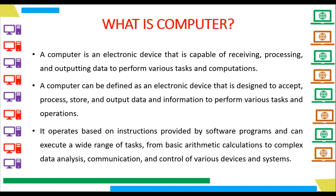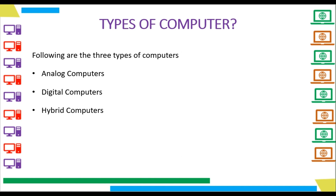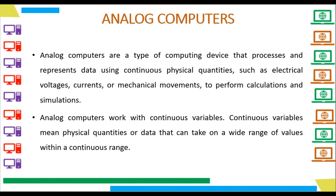Now we will see three types of computers: analog computers, digital computers, and hybrid computers. We will study all these three types one by one. First, analog computers. Analog computers are a type of computing device that processes and represents data using continuous physical quantities, such as electrical voltages, currents, or mechanical movements, to perform calculations and simulations. Analog computers work with continuous variables, meaning physical quantities or data that can take on a wide range of values within a continuous range.